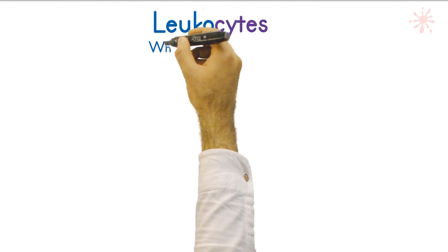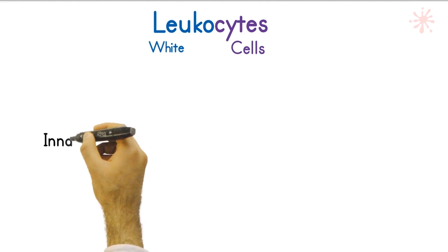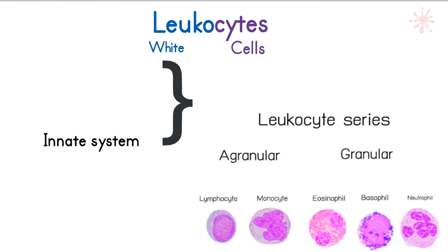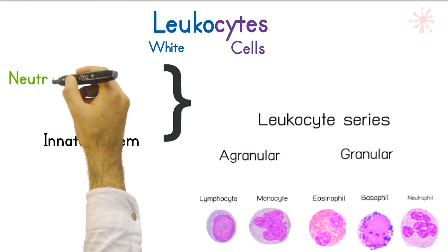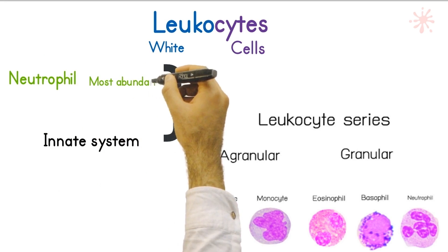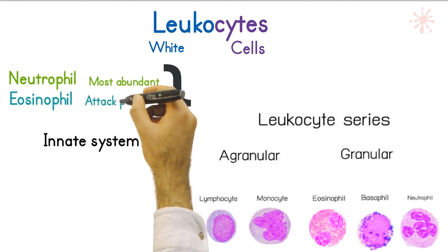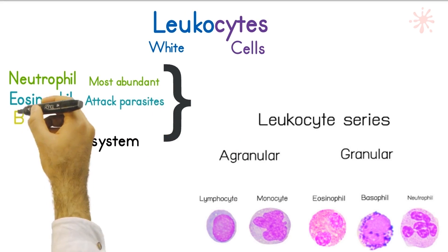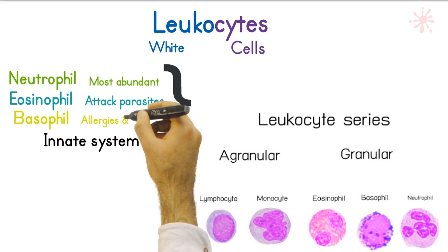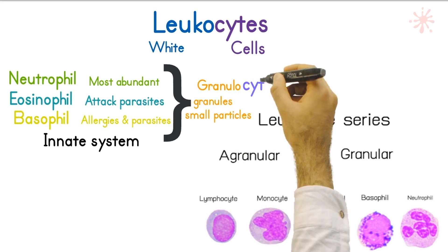Leukocytes is a Greek name for white blood cells. They are part of two critical immune responses. In the innate system we find the neutrophils, the most abundant white blood cells; eosinophils, whose specialty is parasitic infections; and basophils, which respond to allergic reactions and parasite infections. Granulocytes means cells that contain multiple granules within their body.